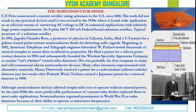This is probably the first company to make and sell commercial silicon semiconductor devices. Many other inventors experimented with alternative materials. Henry received a patent for a carborundum — silicon carbide — detector, just two weeks after that. A Japanese patent for a mineral detector followed in 1908. That covers the history of the discovery of the semiconductor diode. Although semiconductor devices allowed simple radio sets to operate without external power, by the mid-1920s the more predictable performance of vacuum tube diodes replaced them in most radio applications.